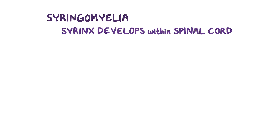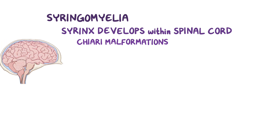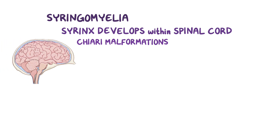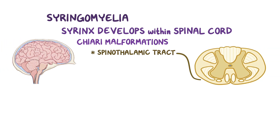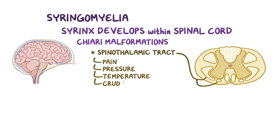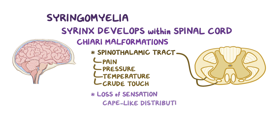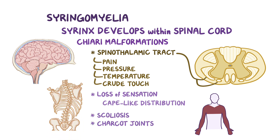As a quick recap, syringomyelia occurs when a fluid-filled cavity, or syrinx, develops within the spinal cord, and it is most commonly caused by Chiari malformation. The expanding cavity interferes with the spinothalamic tract, which is responsible for pain, pressure, temperature, and crude touch, and results in the loss of these sensations in a cape-like distribution along the arms and back. Syringomyelia is also commonly associated with scoliosis and Charcot joints.